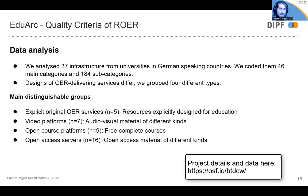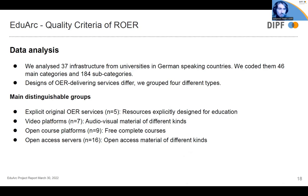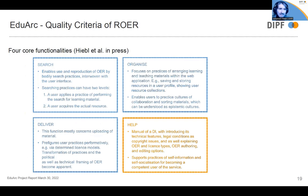In 2021, we analyzed 37 web applications related to German-speaking universities, distinguishing four groups of services: explicit labeled OER services providing resources designed for education; video platforms providing audio-visual material including videos for learning and teaching purposes; open course platforms with free complete courses; and Open Access servers that include open learning and teaching objects. Our investigation discovered four core functions connected with users' action capabilities. The search function enables use and reproduction of OER through search practices interwoven with the digital user interface.